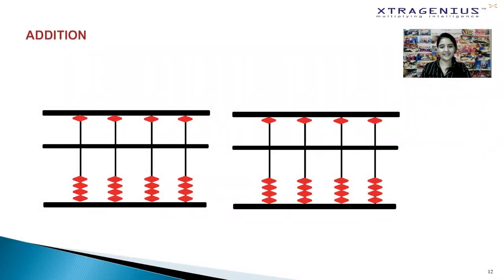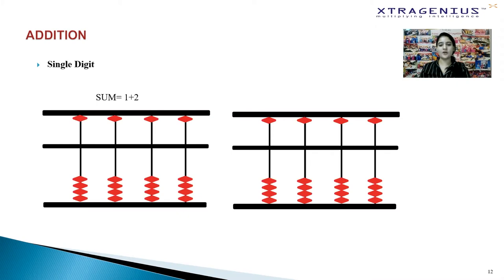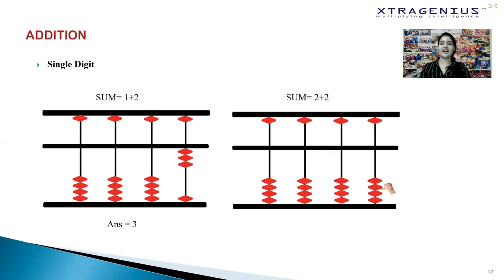Now that we know how to count numbers on the abacus, let's move on to calculations, starting with addition. For 1 plus 2: set one by moving one lower bead in the unit's place towards the center bar, then move two more lower beads towards the center bar for two. The number you arrive at is three. For 2 plus 2: move two lower beads towards the center bar, then repeat for the second two. The answer is four.